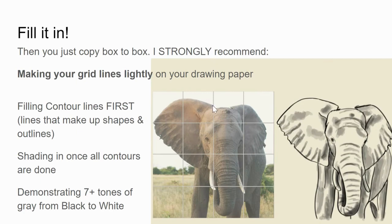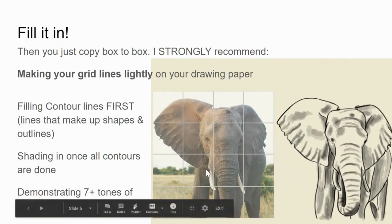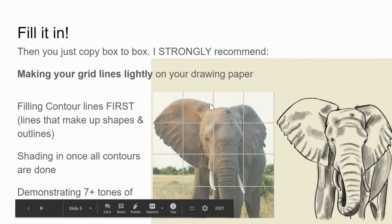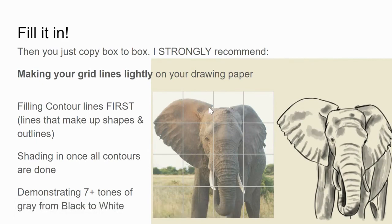I recommend doing all of your contour drawing before you do any shading. Sometimes people draw a couple of boxes and then shade them in, but the trouble with that is if you have an incorrect measurement on any of your boxes and then shade them in, correcting that error becomes a much greater challenge. I strongly recommend finishing the contour lines first, and then shading in with seven or more values from black to white.